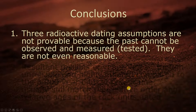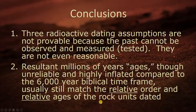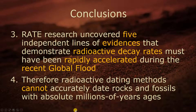Conclusions: the three radioactive dating assumptions — initial conditions, closed system, and constant decay rate — are not provable because the past cannot be observed, measured, or tested. These assumptions aren't even reasonable. Resultant millions-of-years ages, though unreliable and highly inflated compared to the 6,000-year biblical time frame, usually still match the relevant order and relative ages of rock units, because during the flood the older rocks settled first. The RATE research uncovered five independent lines of evidence demonstrating radioactive decay rates must have been rapidly accelerated during the recent global flood. Therefore, radioactive dating methods cannot accurately date rocks and fossils with absolute millions-of-years ages. Continuing research into correction factors for long-age parent-daughter isotope dating systems and recalibration of radiocarbon dates will transform these methods from a foe to our friend.